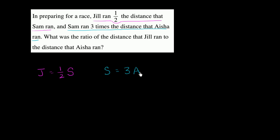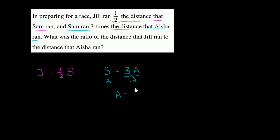So if we want to write this so we have how much Aisha ran in terms of how much Sam ran, we can just divide both sides by three. Dividing both sides by three, we're left with Aisha ran one-third the distance Sam ran.